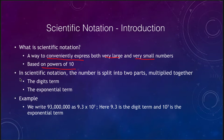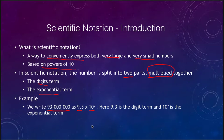When we set up a number in scientific notation we split it into two parts that are multiplied together: the digits term and the exponential term. For example, the number 93 million is written as 9.3 times 10 to the seventh power. The digits term is 9.3 and the exponential term is 10 to the seventh power.